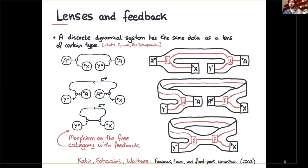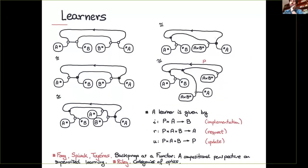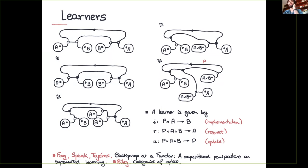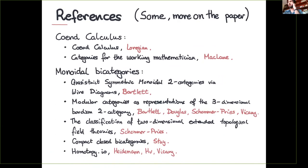In the paper you will find other examples of reasoning with these co-ends and how you get concrete representations with Cartesian categories. There are also many examples on optics — mixed optics and other variants — now done with the graphical calculus.